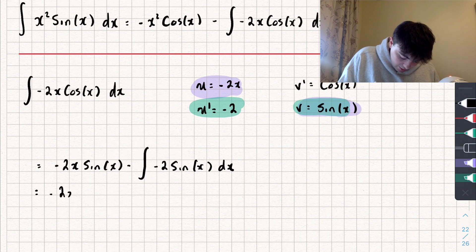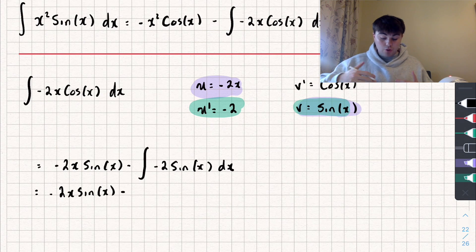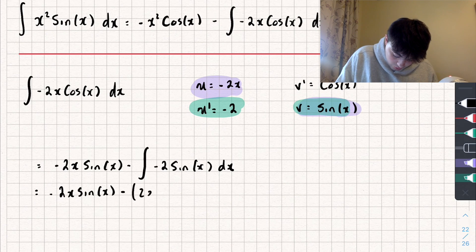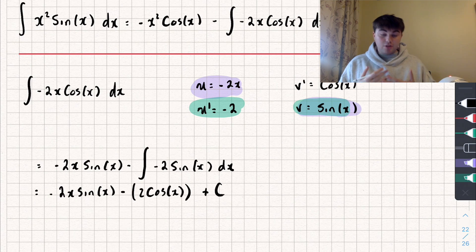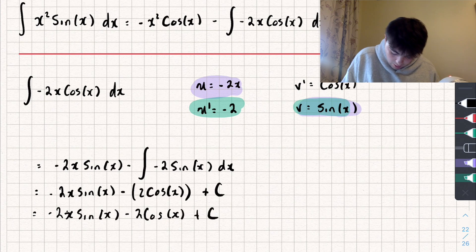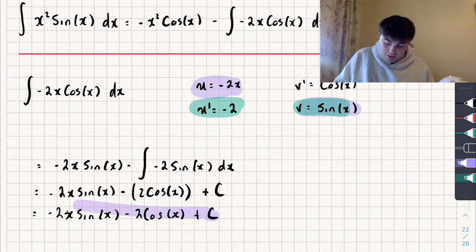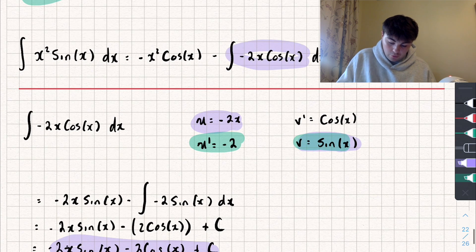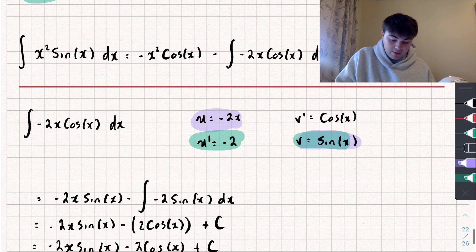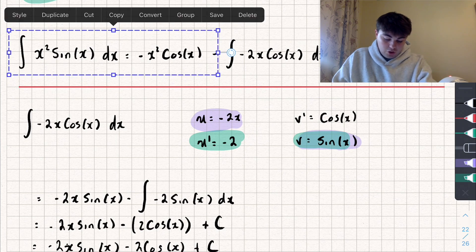Integrating that, we get negative 2x sine of x, subtract — well, integrating negative 2 sine of x gives positive 2 cosine of x — so we have 2 cosine of x, plus the constant of integration. Simplifying: negative 2x sine of x minus 2 cosine of x plus c. This is the result of the inner integral, so now I'm going to substitute that answer back in where that integral appeared.